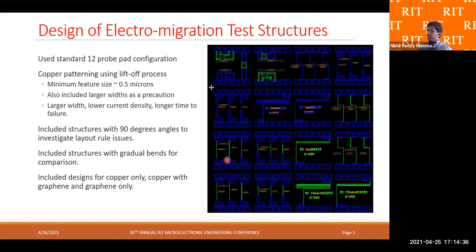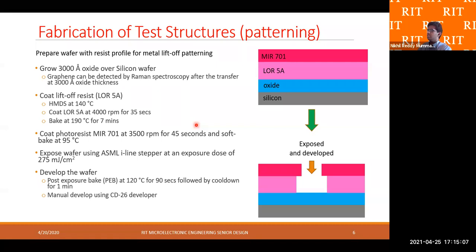Here is a layout of all the test structures built as part of the electromigration testing for this project. We used a standard 12-probe pad configuration. The minimum feature size was approximately 0.5 microns, and we had wires of different widths — 0.5, 1, and 2 microns. We also included 90-degree angles and curved bends at some edges of the wires to observe any noticeable EM stress effects during testing.